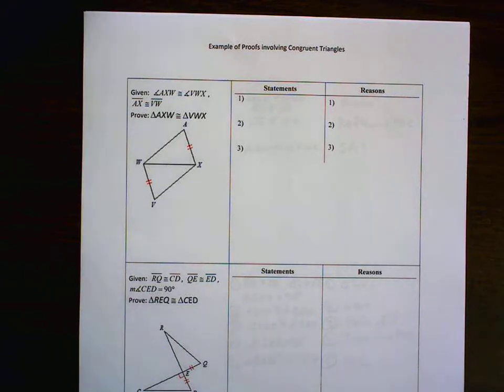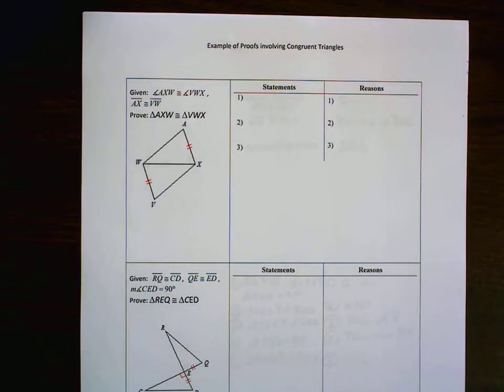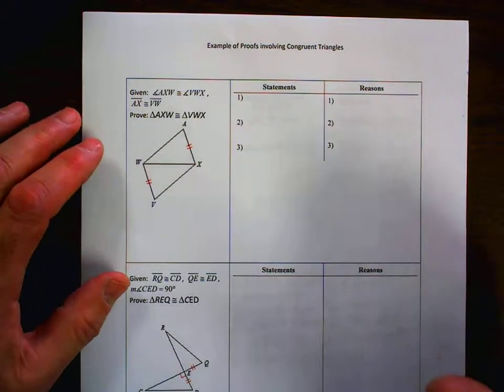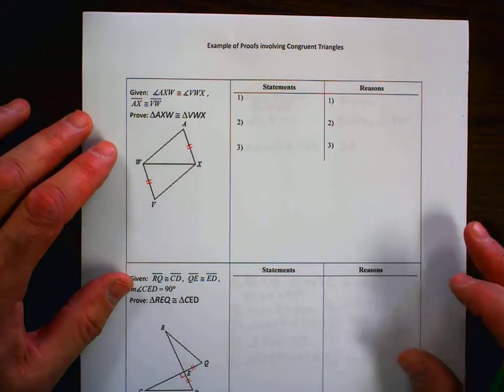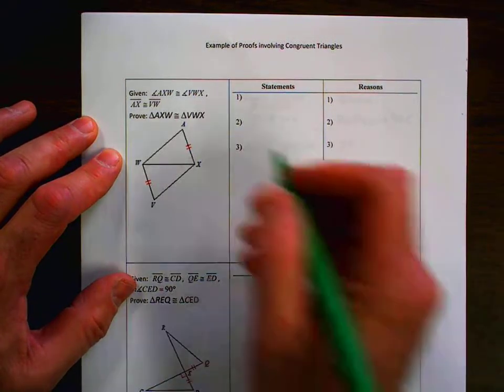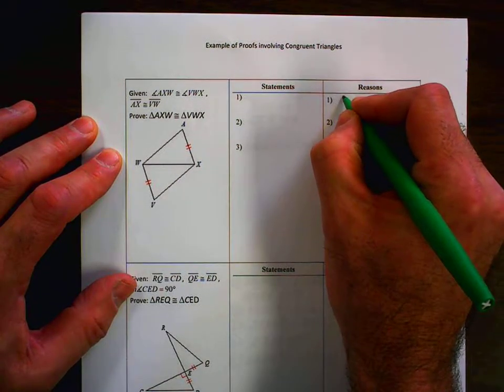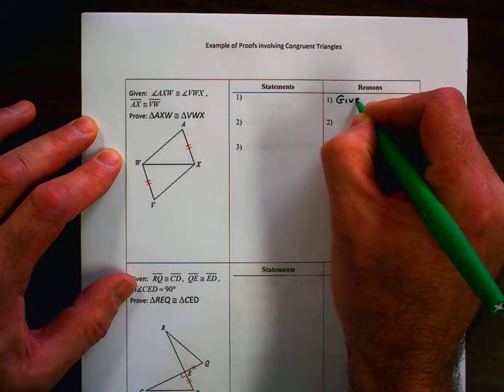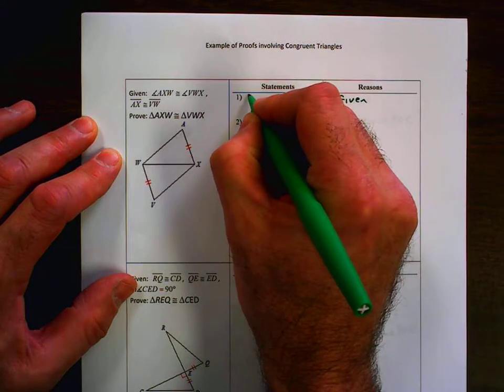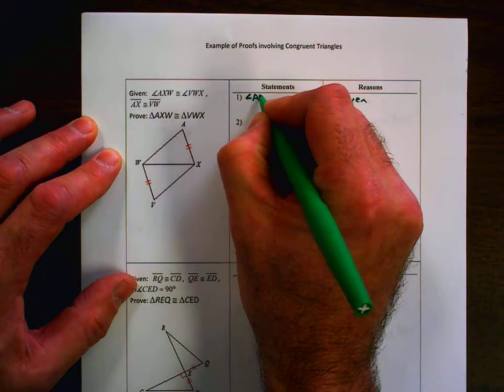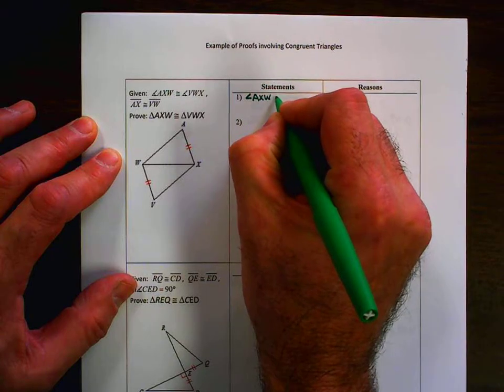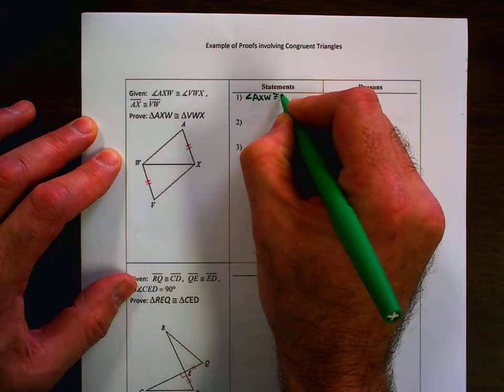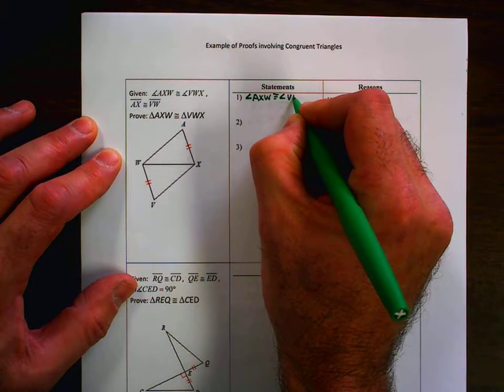From here, we want to go ahead and prove triangles congruent, given some information. So like I said before, we're going to go ahead and write out our given information. That being in this case, angle AXW is congruent to angle VWX.